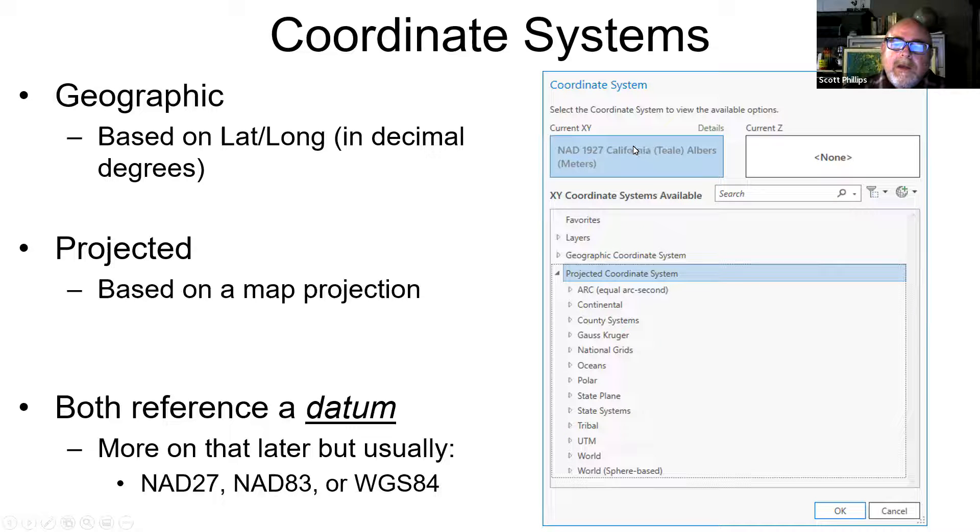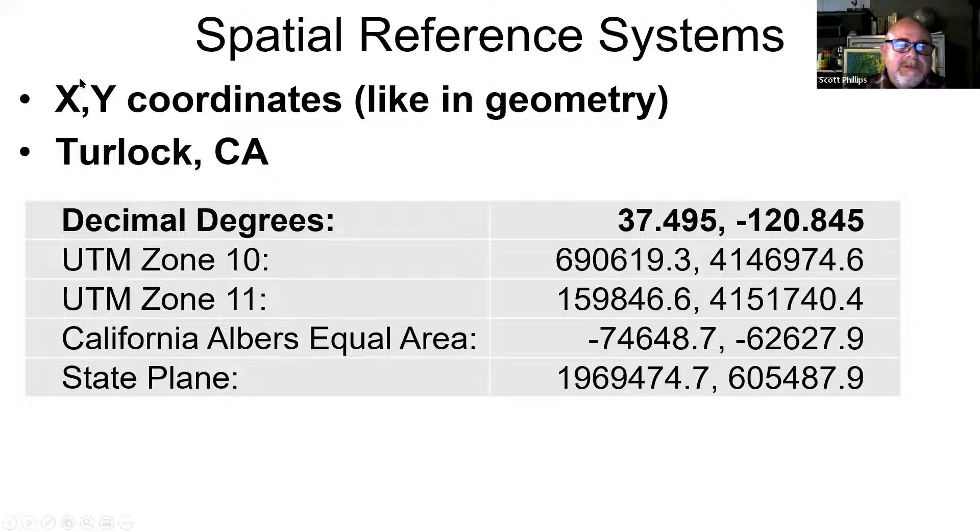So here, this is a coordinate system that's NAD27, which means North American Datum of 1927. And the coordinate system is called California Teal Albers, and the units are meters. We'll describe some of the more common ones that we use in California. These are x and y coordinates like in geometry. These are some examples of different ones. I'm using an example for Turlock, California, because I had prepared a comparison for a different class before when I taught in Turlock. In decimal degrees, the location of Turlock, California can be described as 37.495 degrees north and 120.845 degrees west.